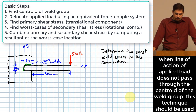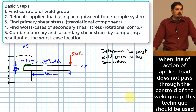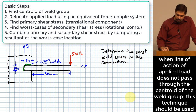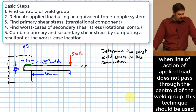This is different from the example we did last time because that example had a line of action of the applied force that went through the centroid of the weld group. Now we have a load whose line of action does not pass through the centroid of the weld group. Therefore, it generates not only a translational effect in the welds, but also a rotational effect. I'm going to show you today how we can handle those two pieces.